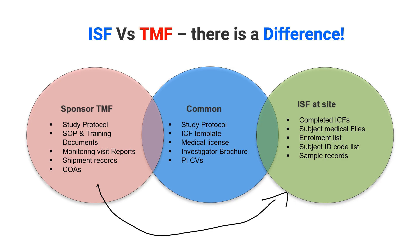The main distinctions are location and scope: the ISF is a smaller subset of the entire TMF, and the TMF is maintained by the sponsor. The TMF contains the protocol, SOPs, training documents, monitoring visit reports, and shipment records of all the IMP and related documents. The ISF contains complete informed consent forms, subject medical files, enrollment lists, subject ID code lists, and sample records at the site. However, certain documents are common to both, such as the study protocol, ICF template, medical license, investigator brochure, and CVs of the PI.